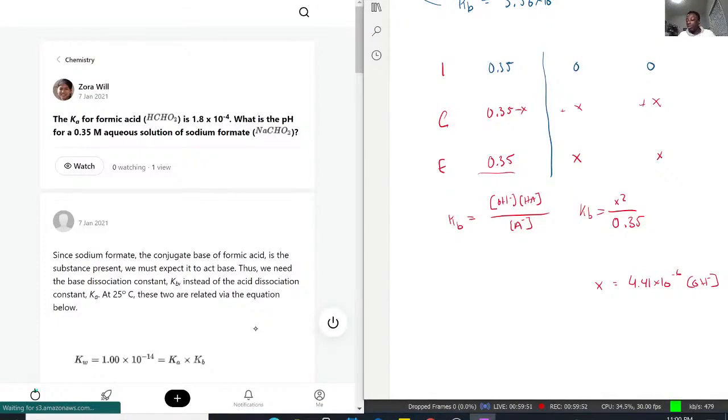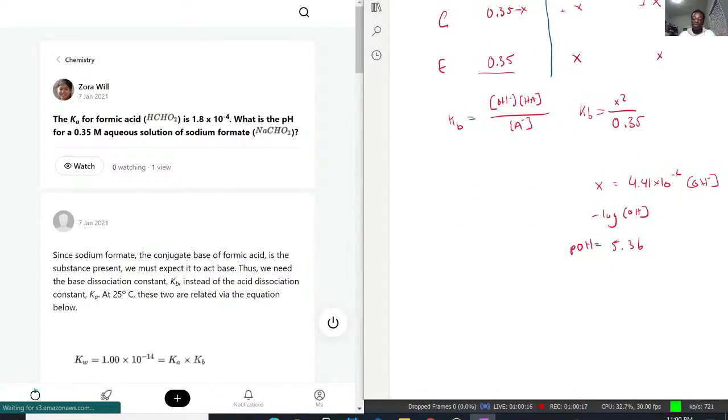We get the pOH. So in this case, the pOH would equal negative log of the answer. We get 5.36 around there. But we're not asking for the pOH. We want the pH. So with this, we still apply our same rule again. 14 minus the pOH would equal the pH. So in this case, 14 minus that answer, we finally get a pH as our final answer of 8.64.